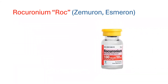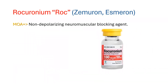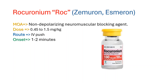Rocuronium, also known as ROC, is a non-depolarizing neuromuscular blocking agent that competitively blocks acetylcholine receptors, causing complete muscle and respiratory paralysis. It is administered at a dose of 0.45 to 1.5 mg per kg IV push, with an onset of action of 1 to 2 minutes, but lasts for a longer period of approximately 45 to 70 minutes, especially in patients with hepatic disease. Due to its longer duration, it is usually used when succinylcholine is contraindicated or unavailable. Prolonged paralysis can be reversed by the reversal agent Sugammadex.